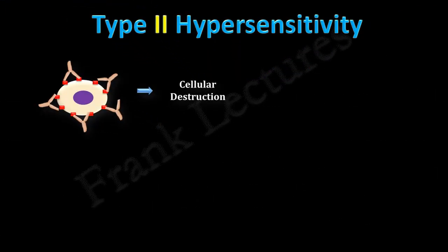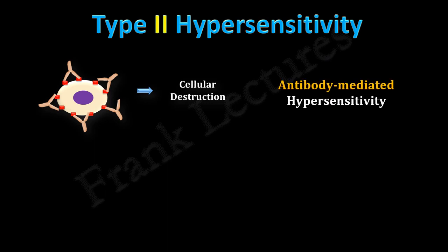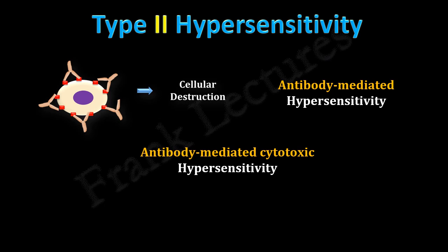In this video lecture we understood that in type 2 hypersensitivity reactions, host tissues are damaged by cellular lysis. These reactions are also known as antibody-mediated hypersensitivity or antibody-mediated cytotoxic hypersensitivity, because the damage is due to cytotoxic effects of the reaction. In the next video lecture, we will study the detailed mechanism of type 2 hypersensitivity reactions.